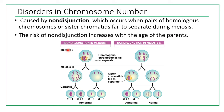Here you can see non-disjunction in meiosis 1 and meiosis 2. If you haven't watched the video about meiosis yet, it would be good to go back and watch that video first, otherwise it would be difficult to understand what's going on. Meiosis is a type of cell division that forms gametes.